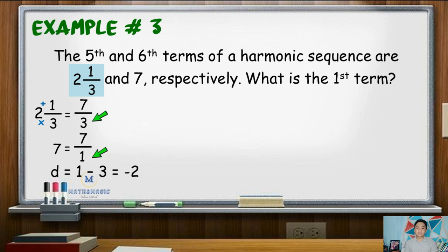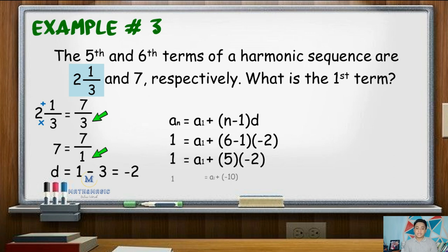Now using the nth term formula to solve the denominator of the first term, that would be a sub n be equal to a sub 1 plus quantity n minus 1 times d. Here we will use the 6th term denominator, that is 1 be equal to a sub 1 plus quantity 6 minus 1 times negative 2. 6 minus 1 is 5 times negative 2, that is negative 10.